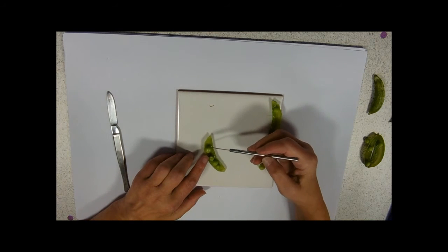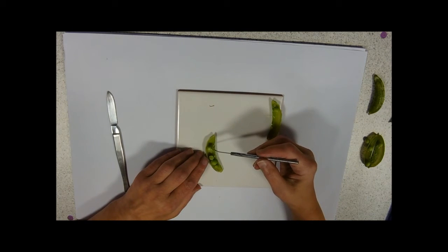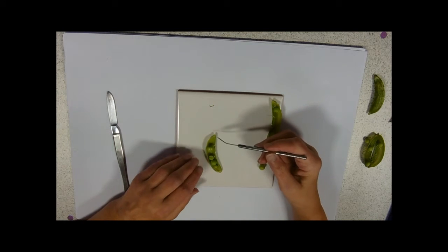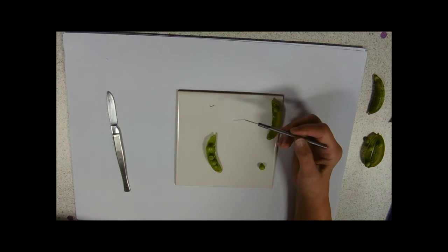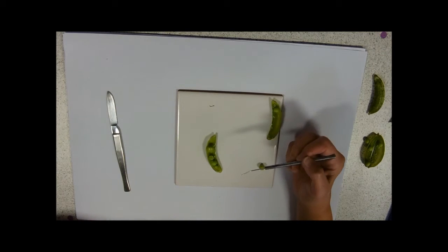We can see that there are a number of ovules inside this ovary. Peas have a long keel shaped flower and the ovary is long with more than one ovule in. Each one of these to form a pea seed has been fertilised.